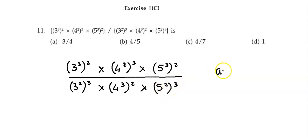Now we know that a raised to m raised to n is equal to a raised to m times n. So applying this law of indices on each of these terms, we obtain the first term in the numerator will be 3 raised to...